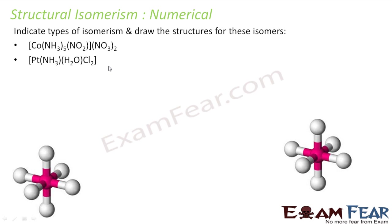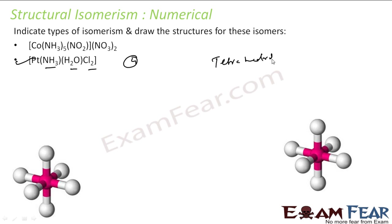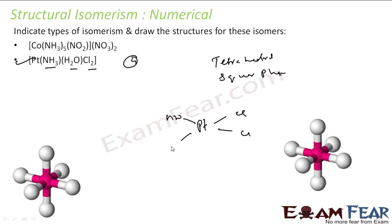Consider [Pt(NH3)(H2O)F2]: the coordination number is 1+1+2 = 4, which means either tetrahedral or square planar — this is actually square planar. In this case you can get a cis isomer, with both water and NH3 on the same side, or a trans isomer. These two geometric isomers are possible.